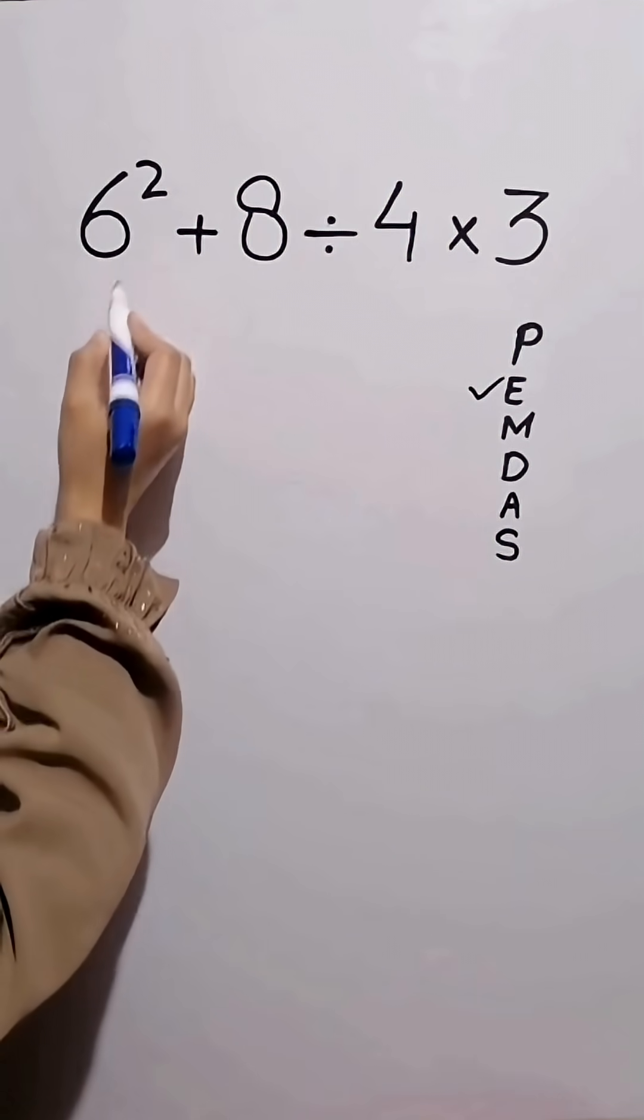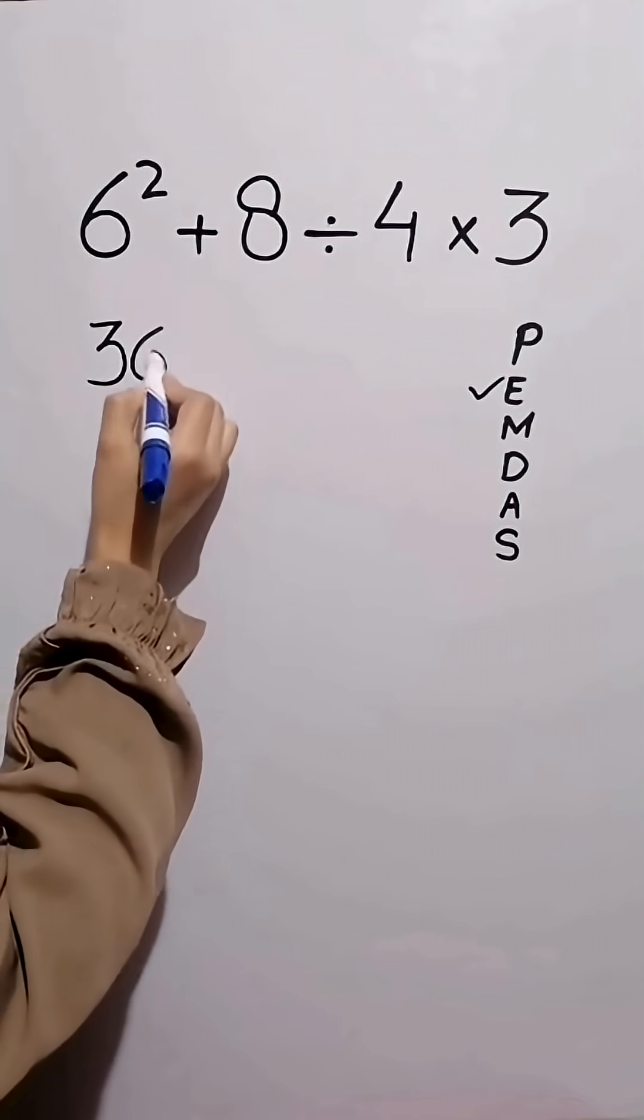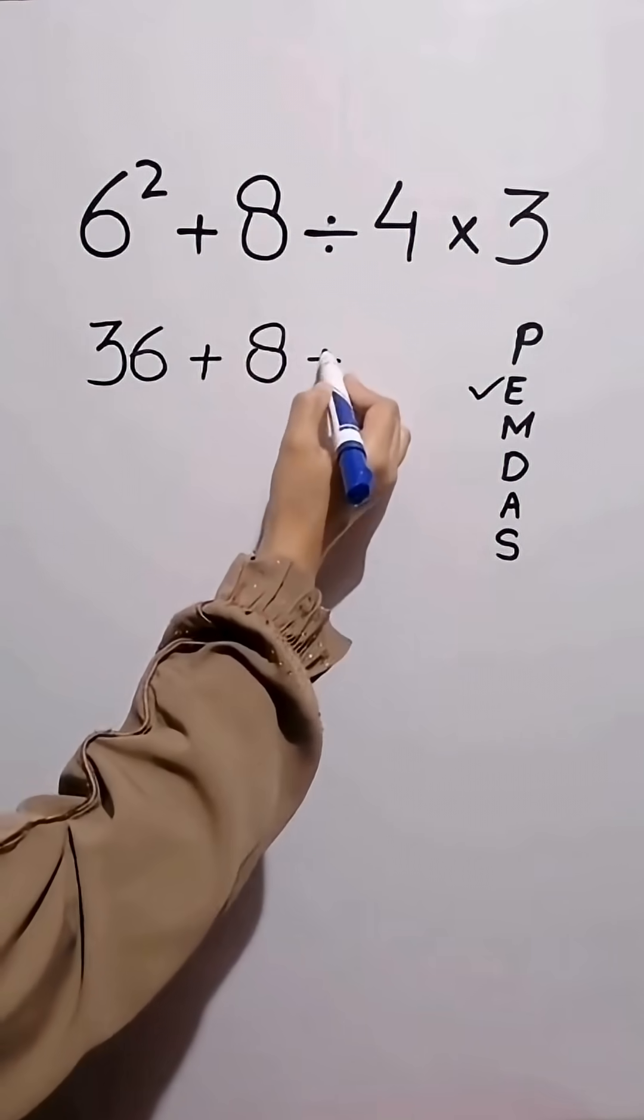6 times 6 gives us 36. 36 plus 8 then divided by 4 then times 3.